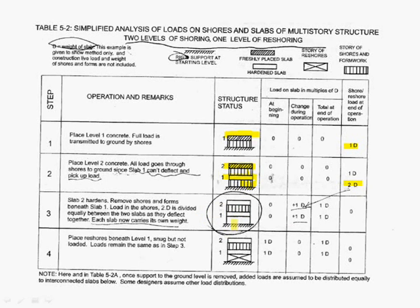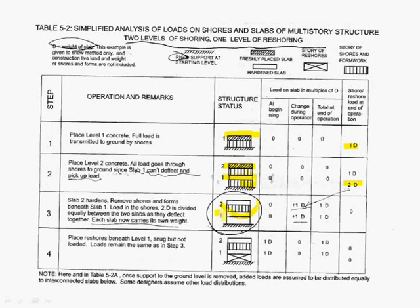Then we take shoring from the first floor. What is going to happen? Now floor 1 and 2 are allowed to deflect, which means previously the load on the first shoring is going to be distributed evenly on floor 1 and 2. So 2 divided by 2, which gives 1D and 1D on each slab.